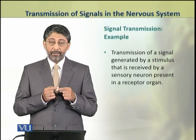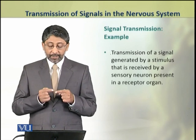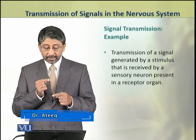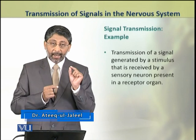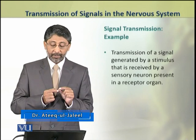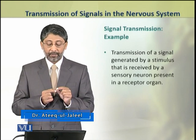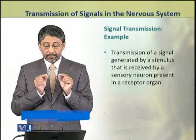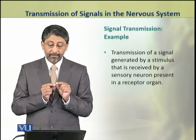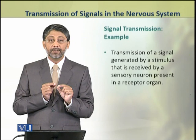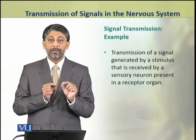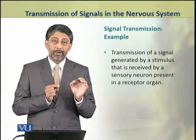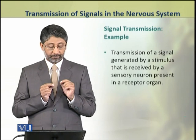Let us take an example in which a stimulus is received by a receptor organ at its sensory neuron. As a result, a signal is generated which is transmitted through the neuron into the other components of the nervous system.